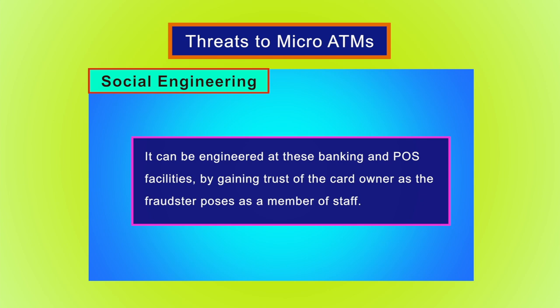The fraudster would then ask the customer to check the card for damages. The fraudster would have gained confidence from the prey using various tactics, such as offering assistance to a customer who perhaps tried to use the ATM without success, or perhaps a customer who is not familiar with the use of the micro ATM machine and requires assistance.